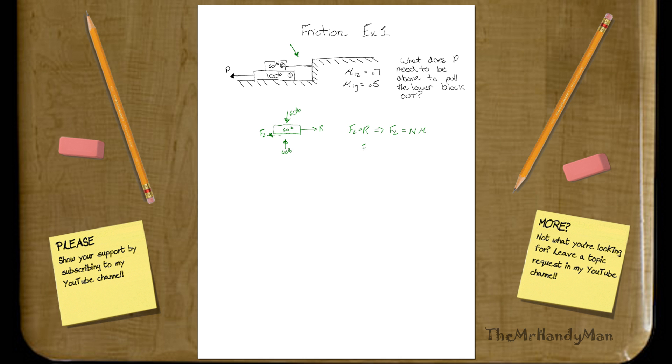So if we calculate that out, we find that it's going to be 60 pounds times 0.7, which is going to be 42 pounds.